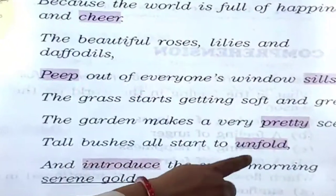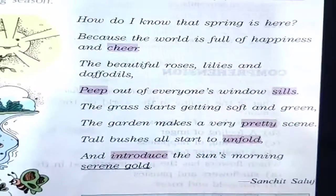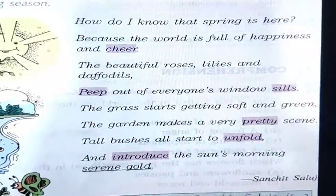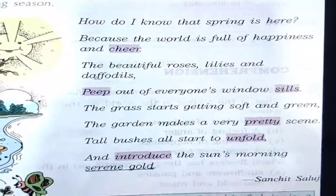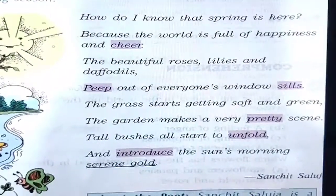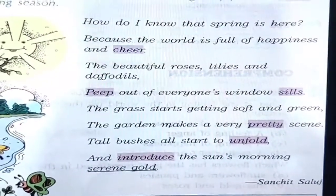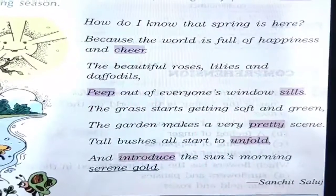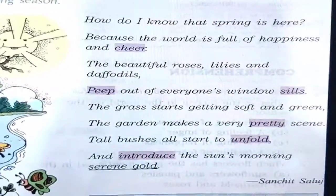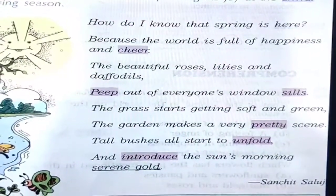Next is Unfold. Unfold means when something grows, blooms, or spreads out. You can make sentences like: the petals of a flower unfold to bloom in the garden. Or you can say: unfold your bed sheet, unfold your dress.